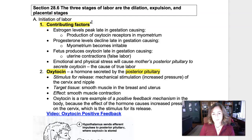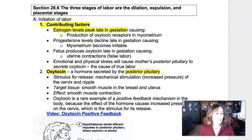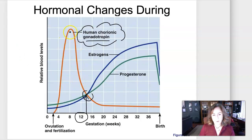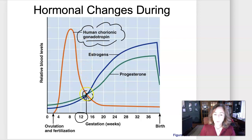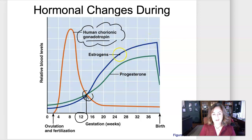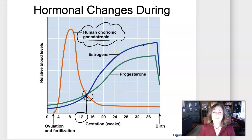Looking at contributing factors leading up to labor: estrogen levels continue to go up throughout gestation. We looked at that graph earlier where HCG increases initially, saving the life of the corpus luteum which produces progesterone. Once the placenta forms around week 12, it secretes estrogen and progesterone, and estrogen levels really continue to rise throughout gestation. What estrogen does is stimulate oxytocin receptors to form in the myometrium — so as gestation continues, the myometrium becomes more and more sensitive to oxytocin.